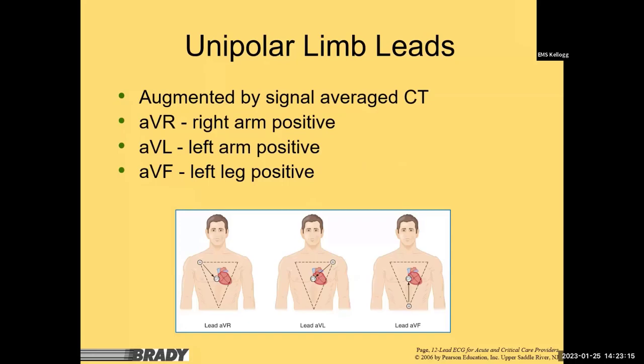The augmented leads — AVR, AVL, and AVF — provide three additional views looking from the center of the chest: up to the right for AVR, up and to the left for AVL, and down to the front for AVF. If the electrical conduction system travels towards a positive lead, you get a positive upright complex. Overlaying the conduction system, the signal starts from the top of the heart and works its way down towards the apex.